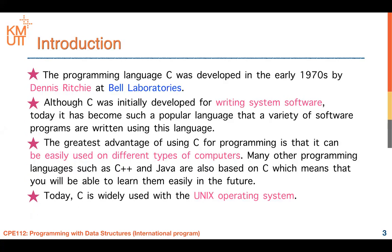If you could remember, this is the introduction to C. The C programming language was developed in the early 1970s by Dennis Ritchie at the laboratories. Maybe you have known about this history before. And what is the reason why we use C programming nowadays? Normally, you use C programming in order to write system software, like operating systems. This is why C programming is still important nowadays.